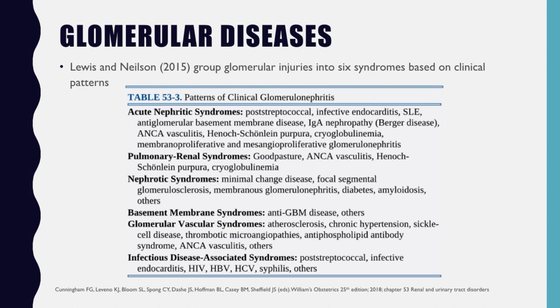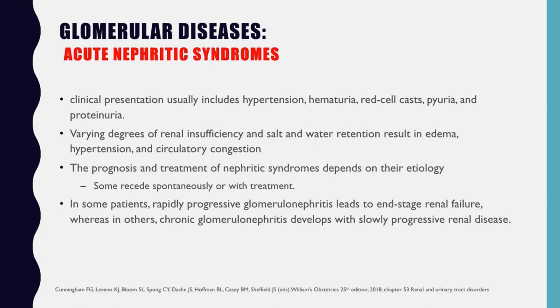Next we talk about glomerular diseases. Lewis and Nelson grouped glomerular injuries into six syndromes: acute nephritic syndrome, pulmonary renal syndrome, nephrotic syndrome, basement membrane syndrome, glomerular vascular syndrome, and infectious disease-associated syndromes. For the acute nephritic syndrome, clinical presentation usually includes hypertension, hematuria, red cell casts, pyuria, and proteinuria, with varying degrees of renal insufficiency and salt and water retention resulting in edema, hypertension, and circulatory congestion. Prognosis and treatment depend on etiology, as some recede spontaneously or with treatment, while others progress to end-stage renal failure or chronic glomerular nephritis.